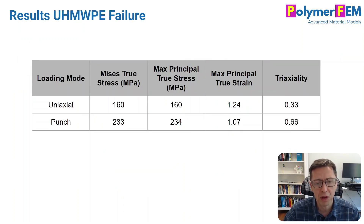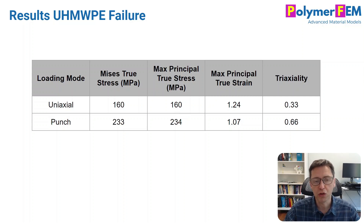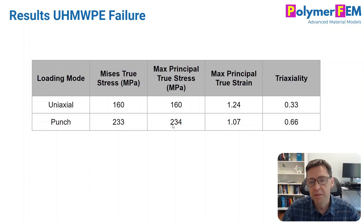Here are the results — very interesting and perhaps surprising. If you look at Mises true stress as a failure condition, in uniaxial loading this polyethylene fails at 160 MPa. But in the punch test, the Mises stress at the onset of failure is way larger, suggesting that you should not use Mises stress as a way to characterize failure of this polyethylene. Many people say Mises stress may be a good idea if the material is ductile — here's an example where it doesn't work. Similarly, max principal true stress doesn't really change from the Mises stress under these loading conditions. The max principal true strain is a little bit closer, but there's still a relatively large error between these.